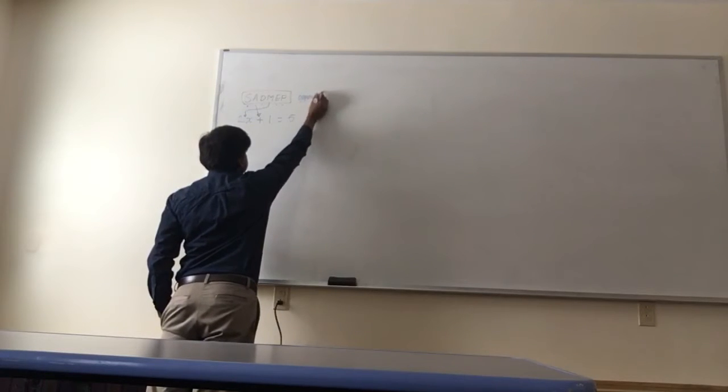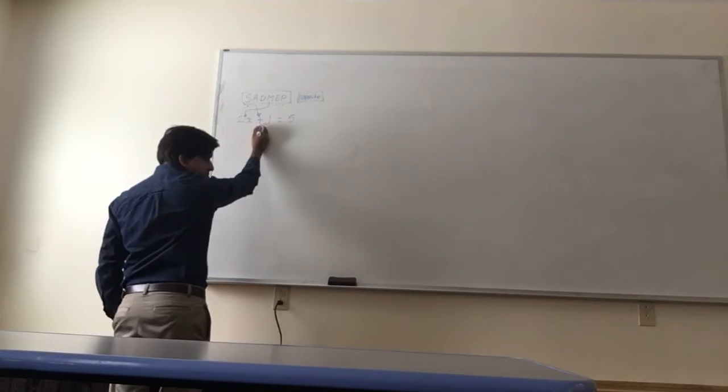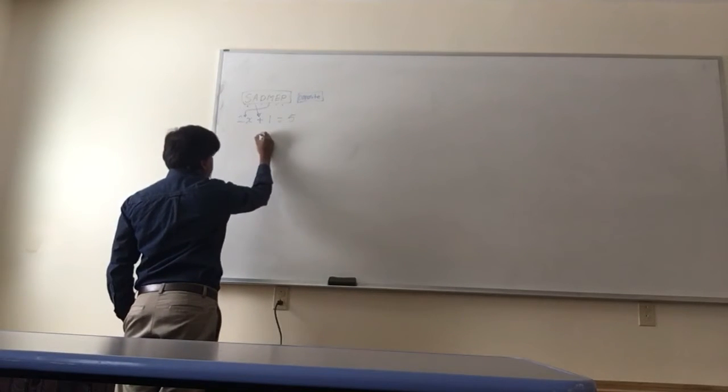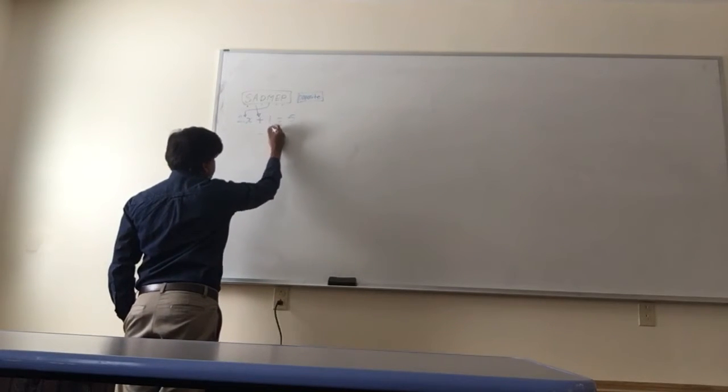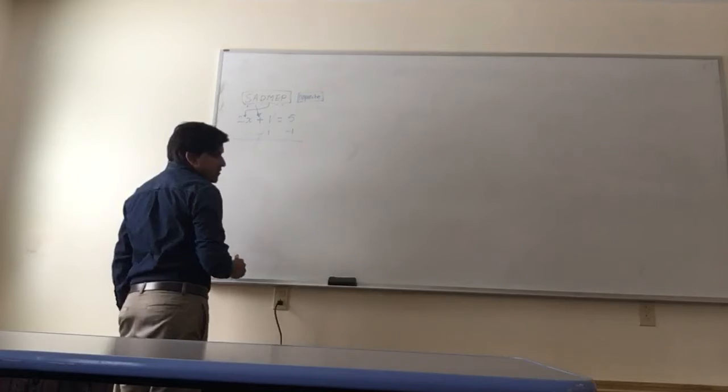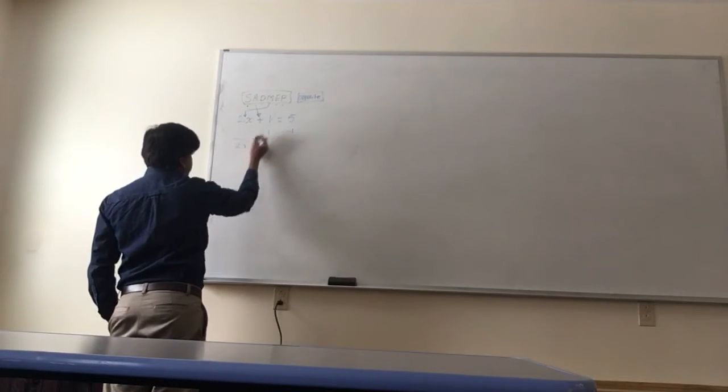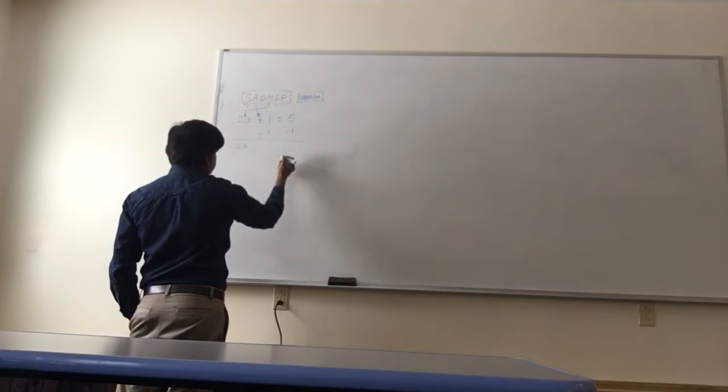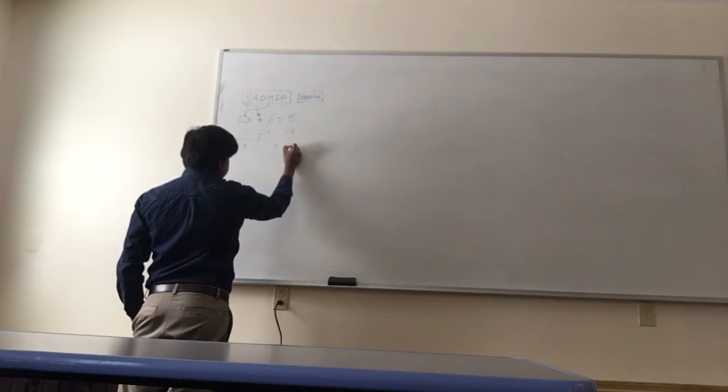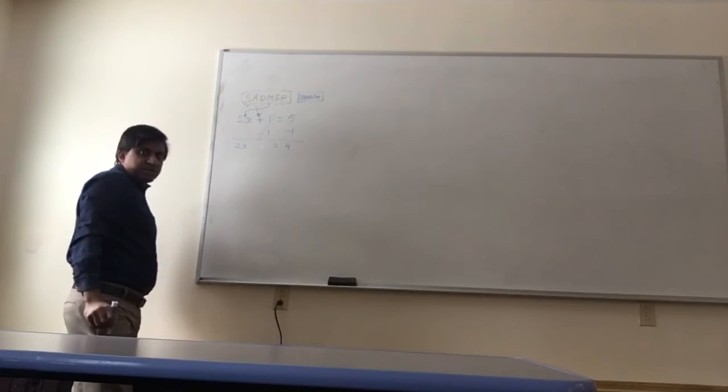So we'll do the opposites now. Whatever we see, we'll do the opposite of it. What's the opposite of addition? Subtraction. So let's subtract this value on both sides. Now this will cancel. So what are we left with? We have 2x. This became 0 plus 1 minus 1 and now we have 4.